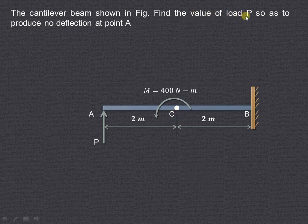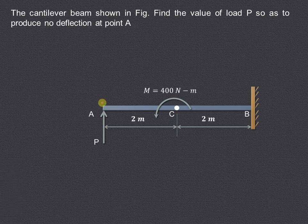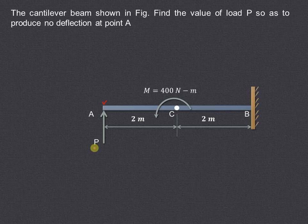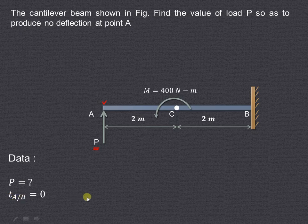Now we have to find out the value of P so as to produce no deflection at point A. So if the deflection at this particular free end is to be 0, then what will be the magnitude of this point load P that we have to find out. In other words we can say that delta_AB is equal to 0.